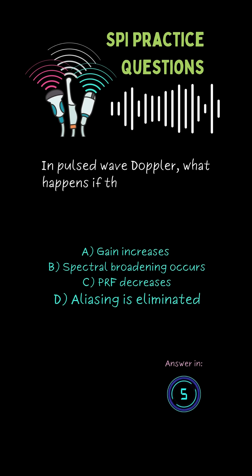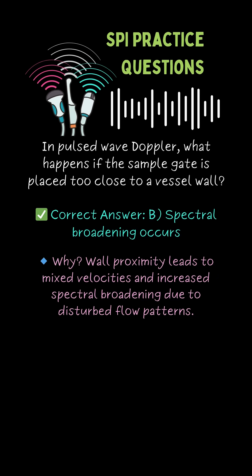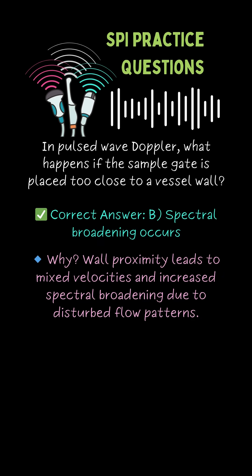In pulse wave Doppler, what happens if the sample gate is placed too close to a vessel wall? B. Spectral broadening will occur.